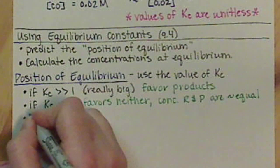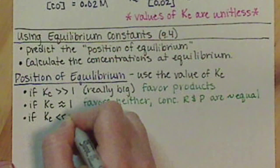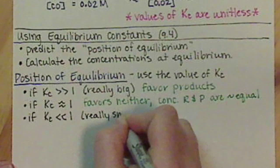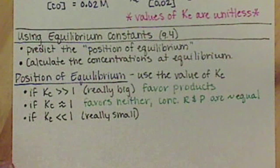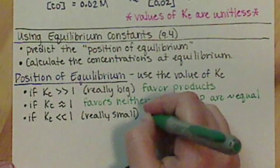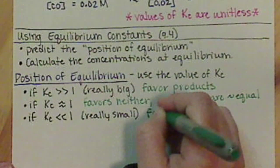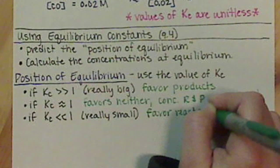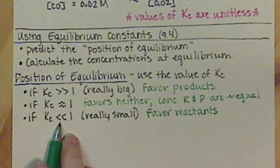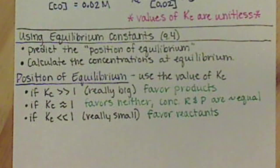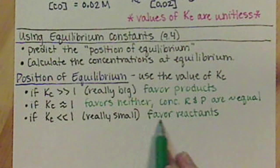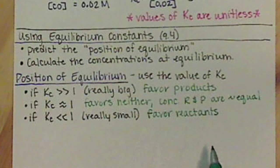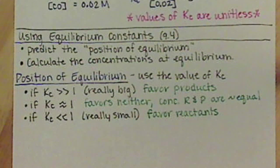If our Kc is much, much smaller than 1, that means that we're going to favor the reactants. If we have a number that's smaller than 1, that denominator is really big, which means that our concentration of our reactants is very high. So our position of equilibrium favors our reactants.